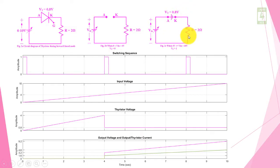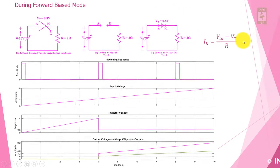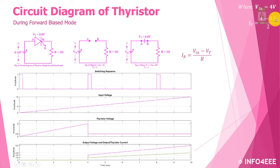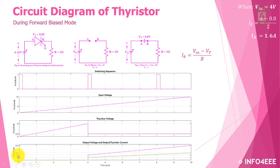To identify the current through the resistance we need to apply KVL in this circuit. After applying KVL you will get the expression for IR. When input voltage is 4V, IR will be (4 − 0.8) / 2 = 1.6A, which is clearly shown here. To calculate the voltage drop across the resistance, just multiply by 2, so the voltage drop will be 3.2V.